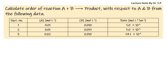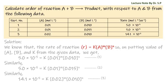We have a question: calculate the order of reaction A plus B gives product, with respect to A and B, from the following experimental data — concentration of A and B with its rate constant k is given. For such a numerical problem, we have to make three equations as three data points are provided. We know that the rate of reaction r is equal to rate constant k times concentration of A to the power m and concentration of B to the power n.